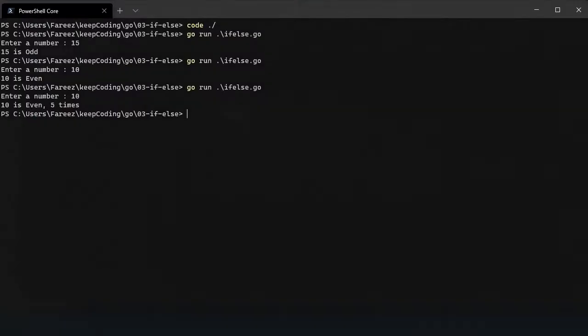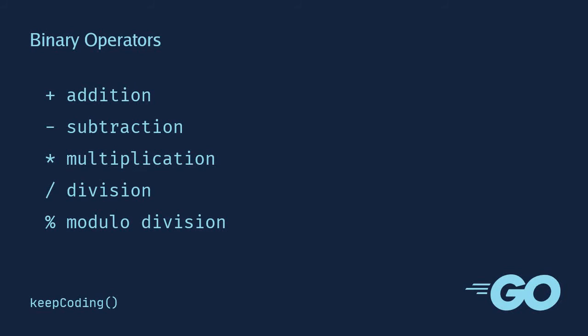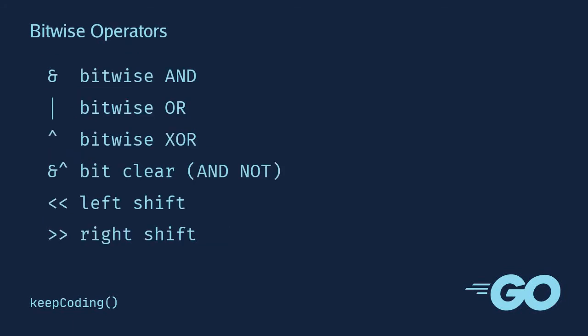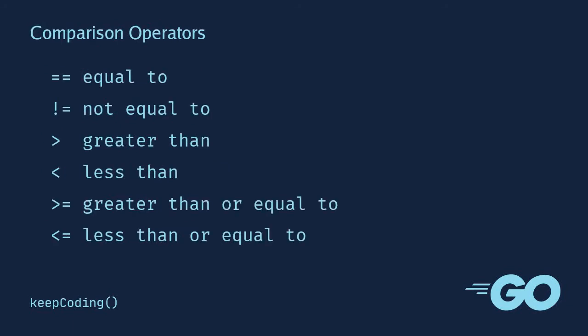Let's see what Go offers compared to C-style languages. There are no ternary operators available in Go, unlike C-style languages. We have arithmetic operators: addition, subtraction, multiplication, division, and modulo division. We also have bitwise operators, which operate at the bit level. For comparison operators, we have equal to, not equal to, greater than, less than, greater than or equal to, and less than or equal to.